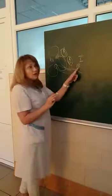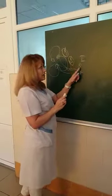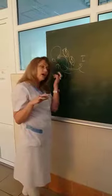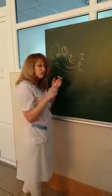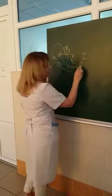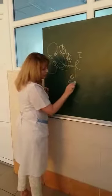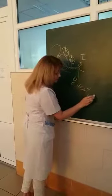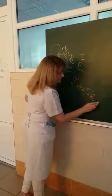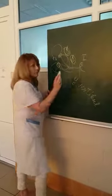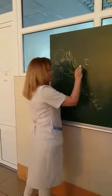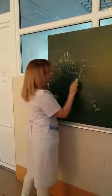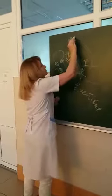The first neuron of the vestibular analyzer is located at the bottom of the meatus acousticus internus. This ganglion is called the ganglion vestibulare. All these structures are located in the meatus acousticus internus.